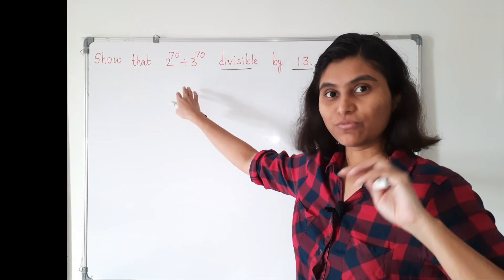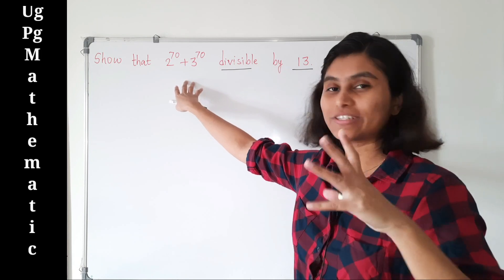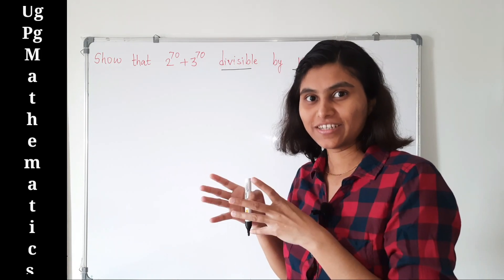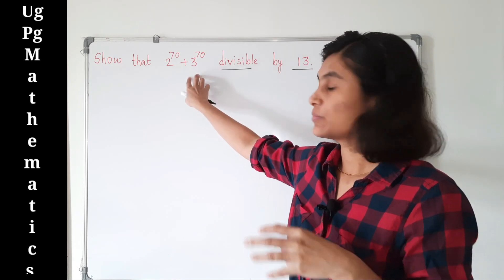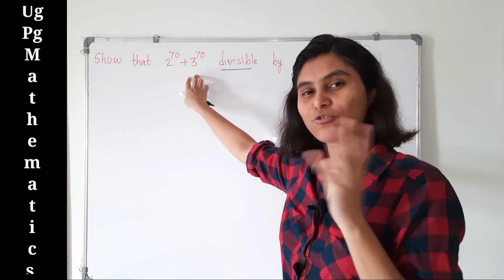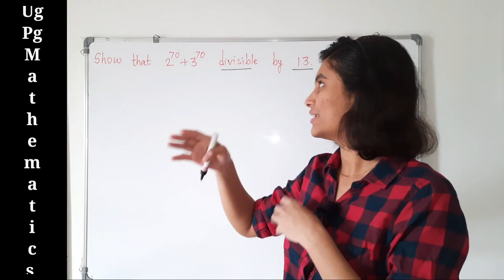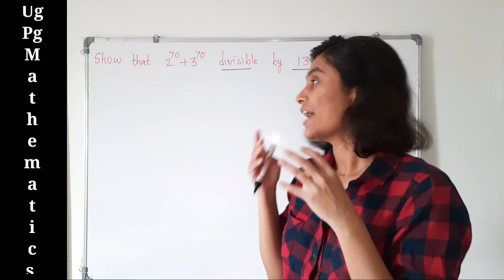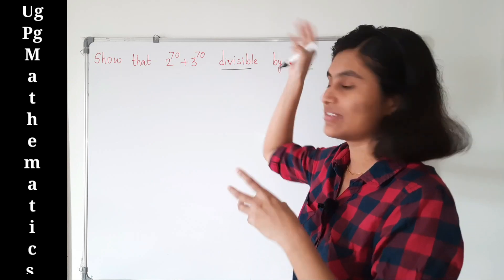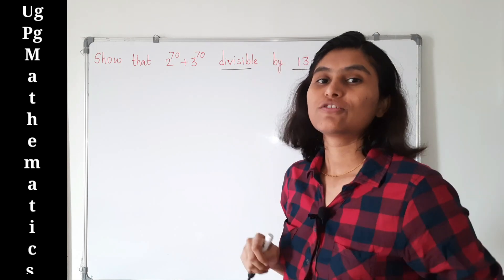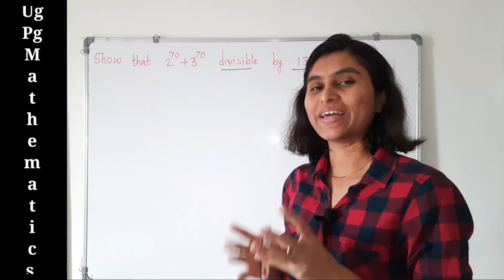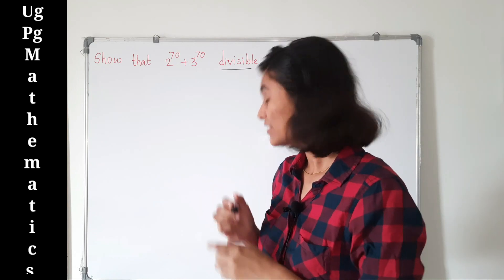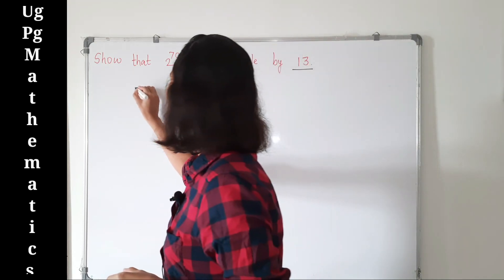Now if you look at these numbers, 2 raised to 70 and 3 raised to 70, these are very big numbers. Even calculating these numbers using a calculator is very difficult. We cannot just compute 2 raised to 70 and 3 raised to 70, add them, and show the result is divisible by 13. So we have to use a mathematical trick.